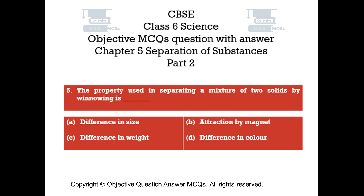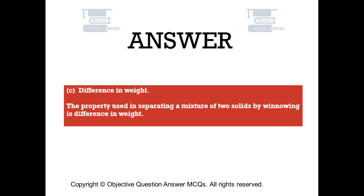Question number 5. The property used in separating a mixture of two solids by winnowing is: Option A, Difference in size. Option B, Attraction by magnet. Option C, Difference in weight. Option D, Difference in color. The right answer is Option C — Difference in weight. The property used in separating a mixture of two solids by winnowing is difference in weight.